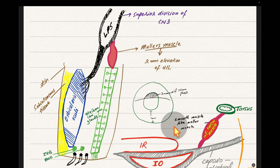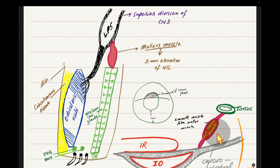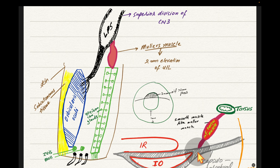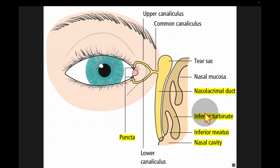The structures analogous to the levator palpebrae superioris and Müller's muscle in the lower lid are the capsulopalpebral fascia and the inferior tarsal muscle. The capsulopalpebral fascia is a connective tissue sheath that surrounds the inferior oblique muscle and then attaches to the skin. The inferior tarsal muscle arises from this fascia and attaches to the tarsus. Like Müller's muscle, the inferior tarsal muscle is a smooth muscle.